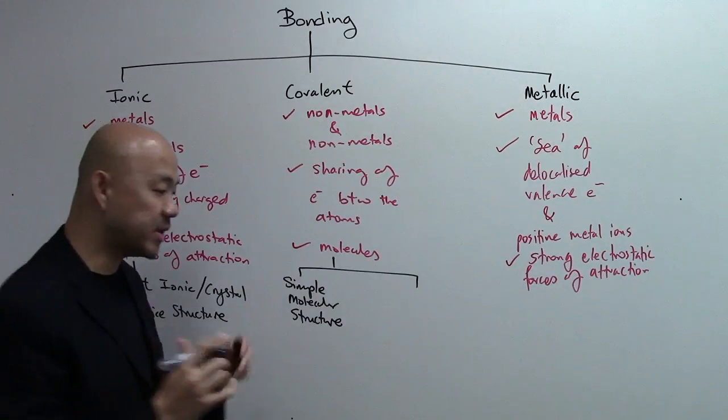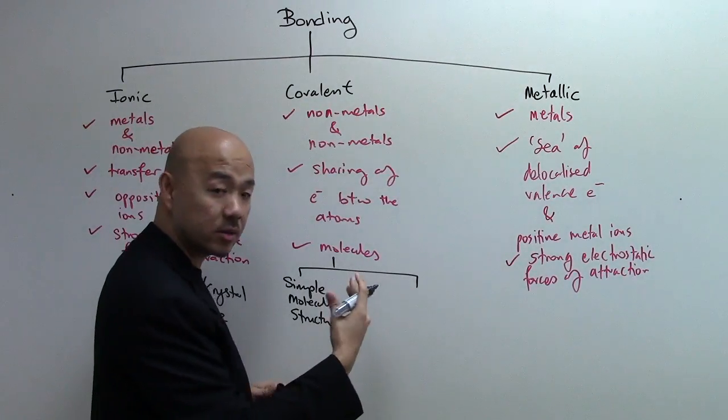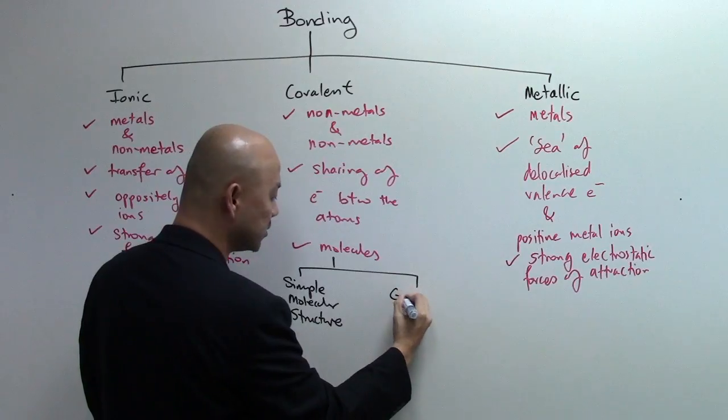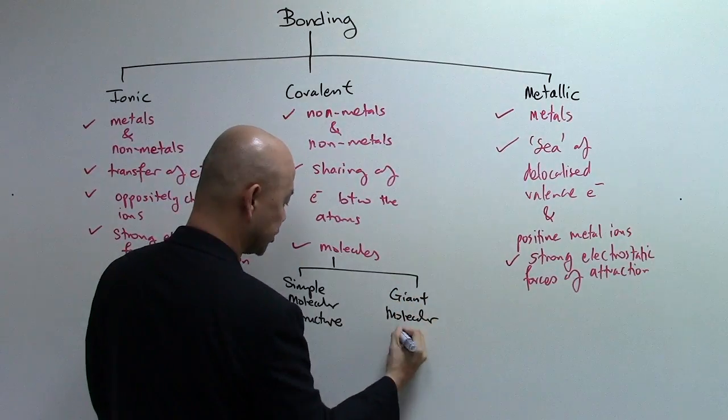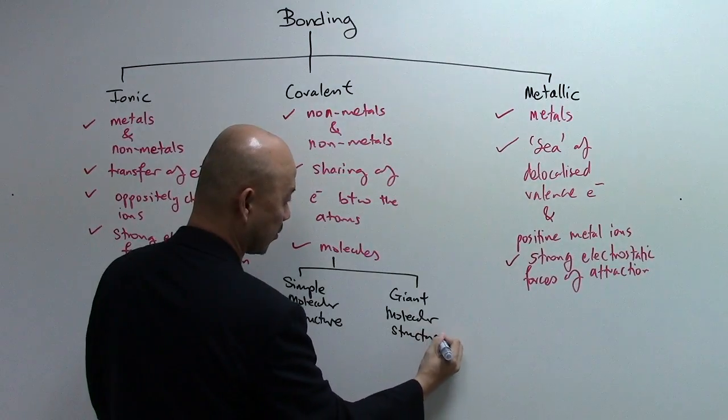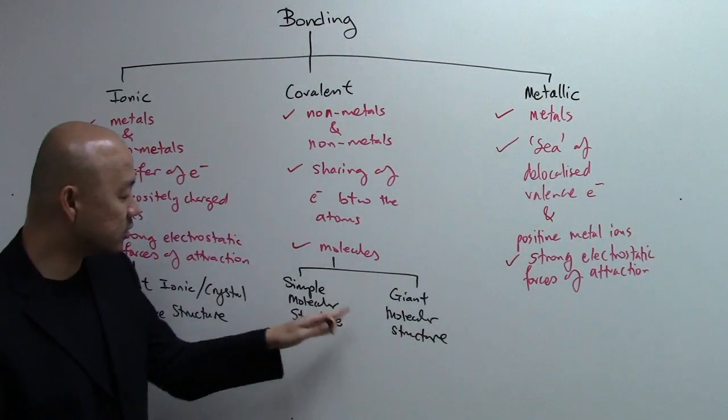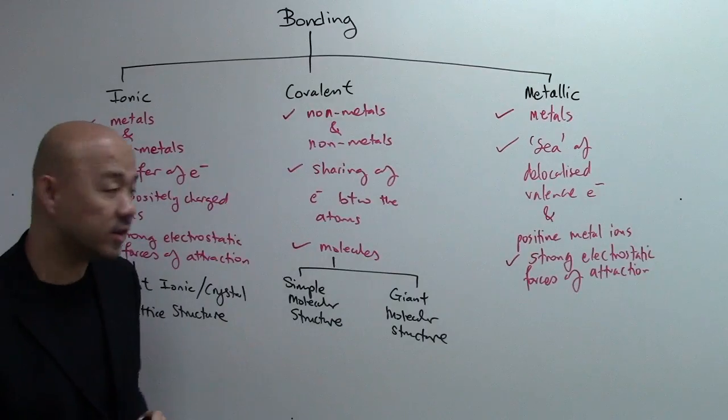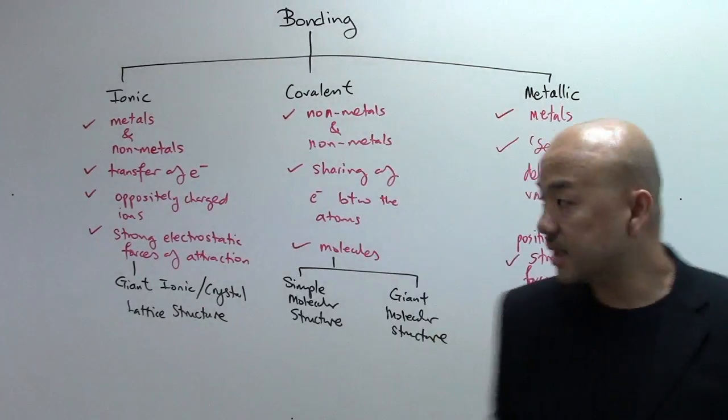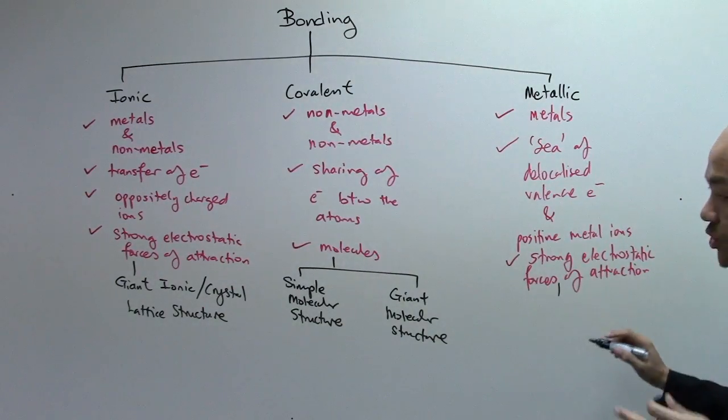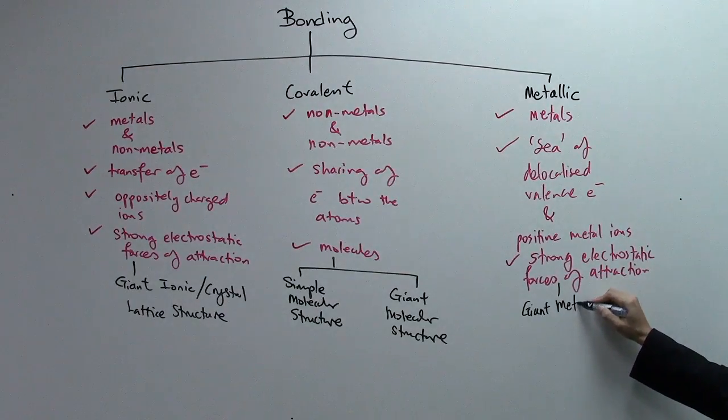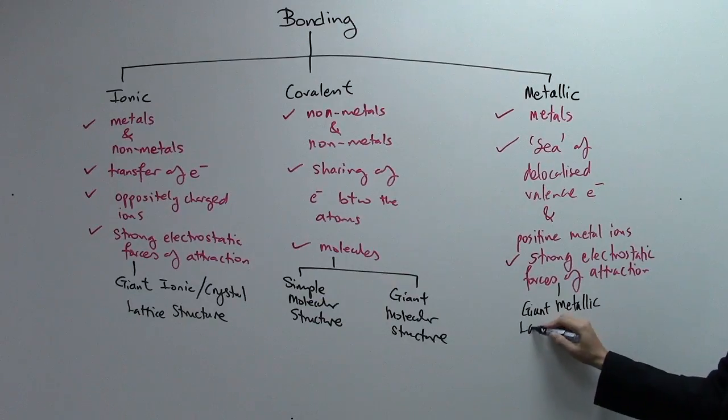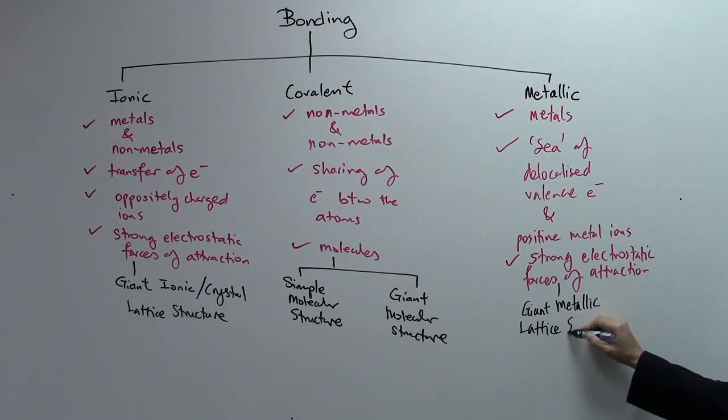When it's big, we call it macromolecular structures, macromolecule or simply giant molecular structure. So these are the two types of structures under covalent bonding. Metallic bonding, the structure that they have formed is known as giant metallic lattice structure.